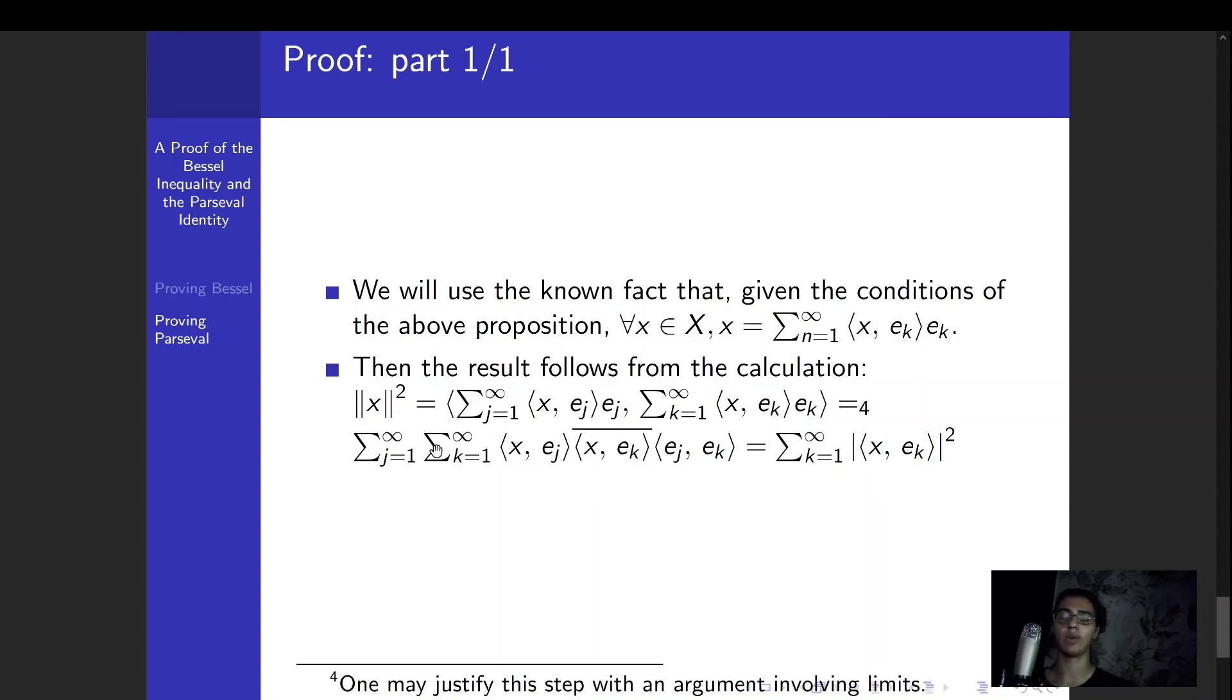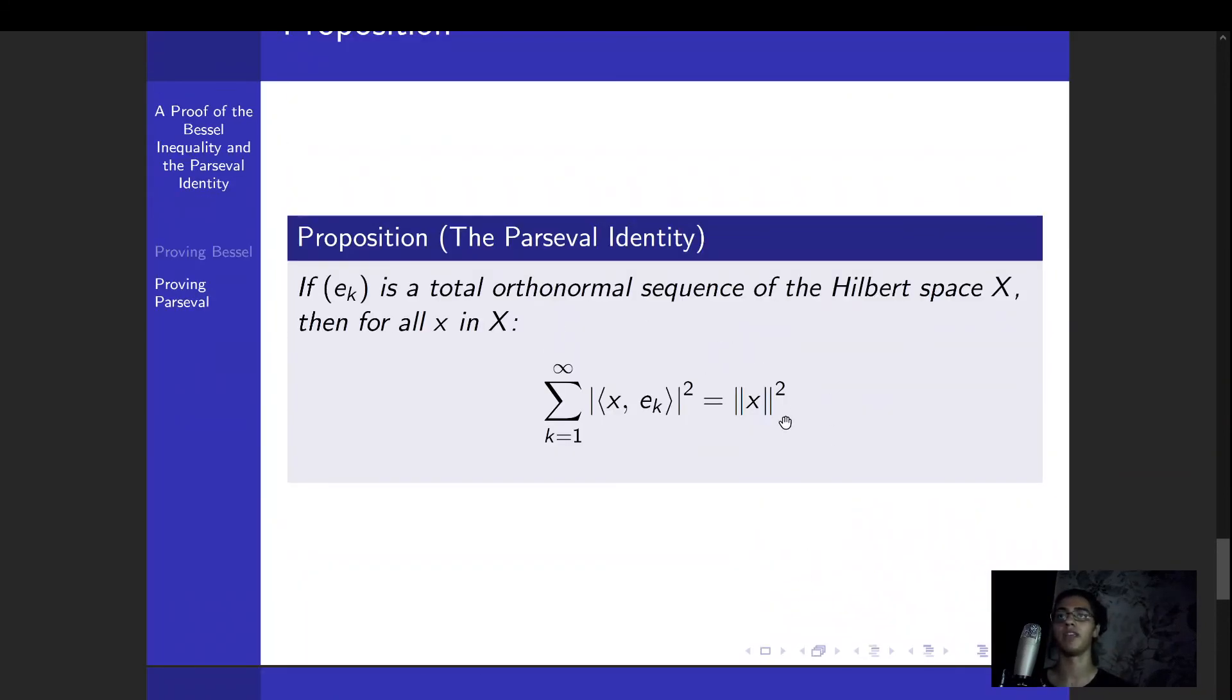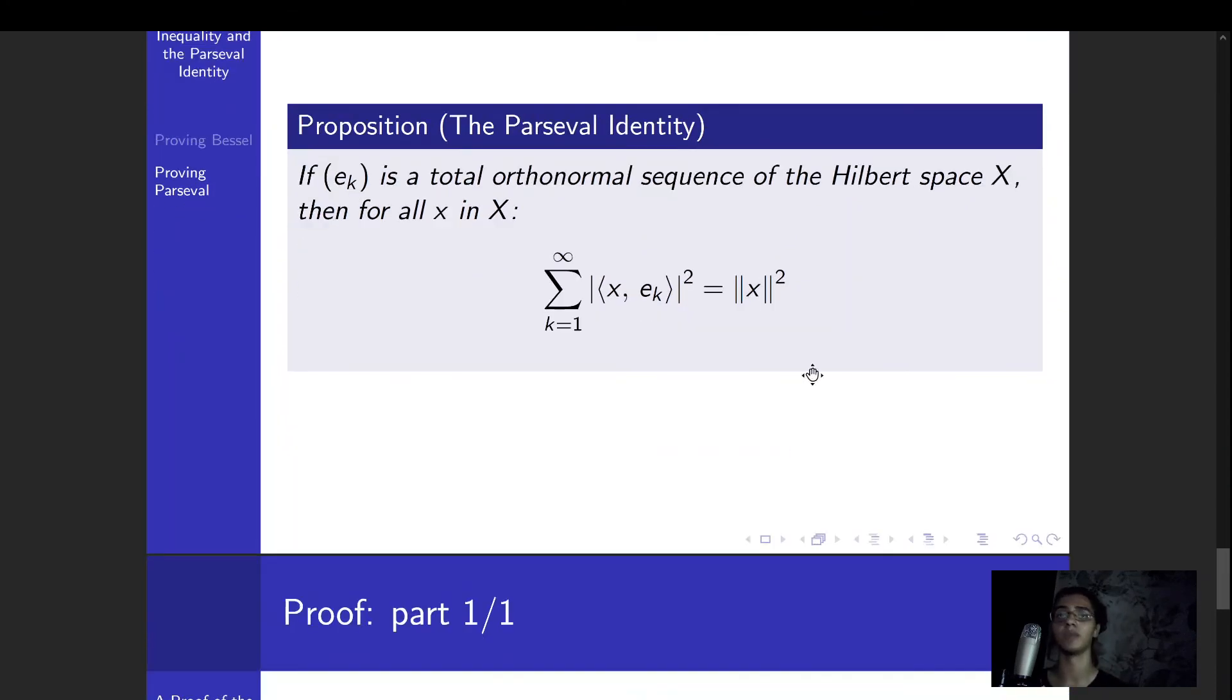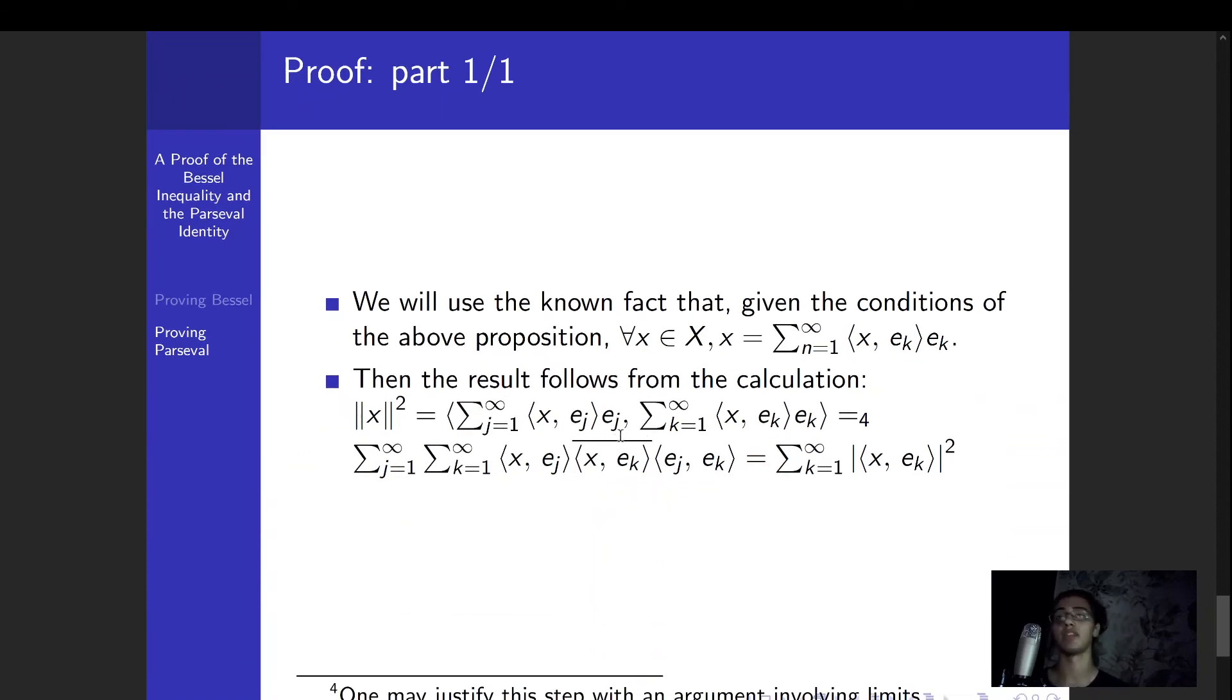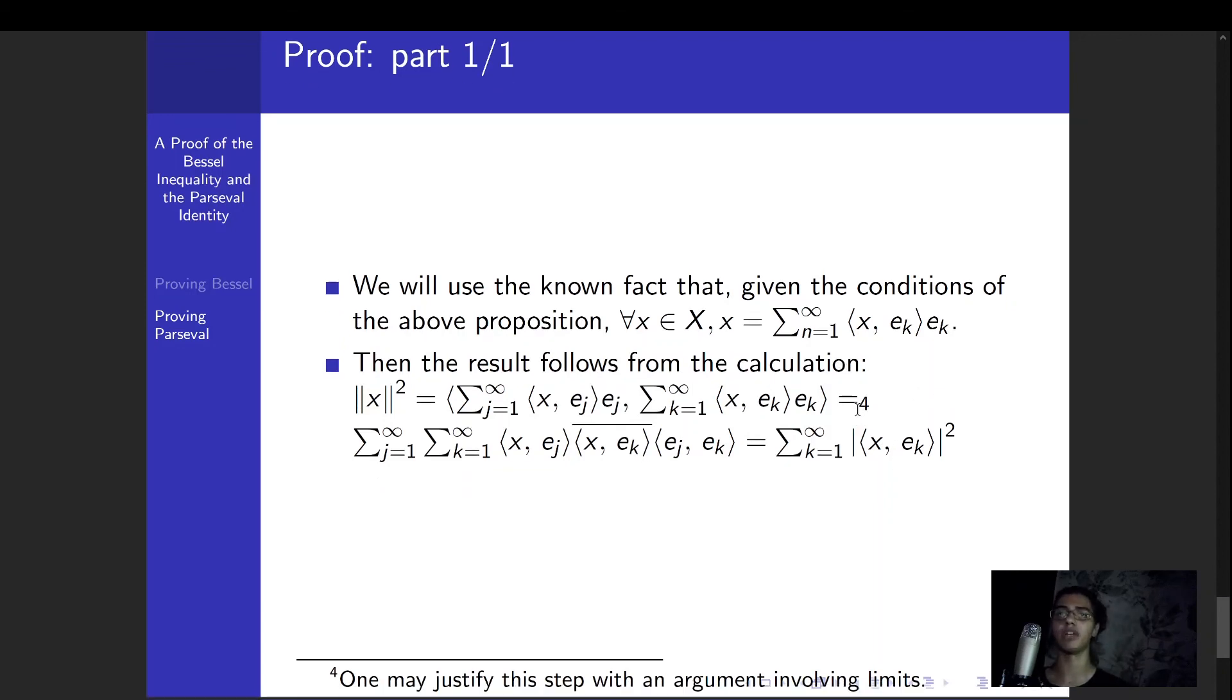Writing down the, just calculating the value of the square of the norm of x, which is essentially what Parseval wants, right? Parseval just asks what is the, what does the norm squared of x equal? And so we're trying to answer that here. We write down the norm squared of x, we write x, we write the norm squared of x as the inner product of x with itself. And we have this one additional step 4 here.